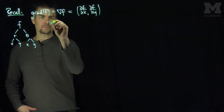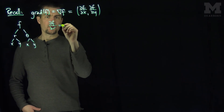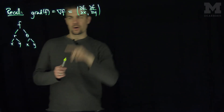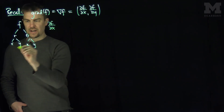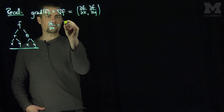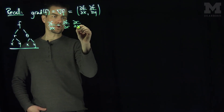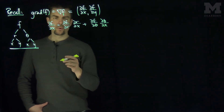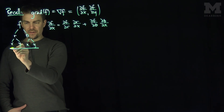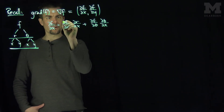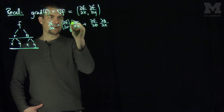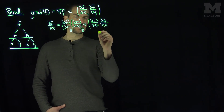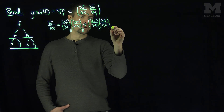Let's compute ∂f/∂x first. By the chain rule: ∂f/∂x = (∂f/∂r)(∂r/∂x) + (∂f/∂θ)(∂θ/∂x). It's important to note that x and y are independent variables at their level, and r and θ are independent variables at their level. So ∂f/∂r treats θ as constant, ∂r/∂x treats y as constant, ∂f/∂θ treats r as constant, and ∂θ/∂x treats y as constant.